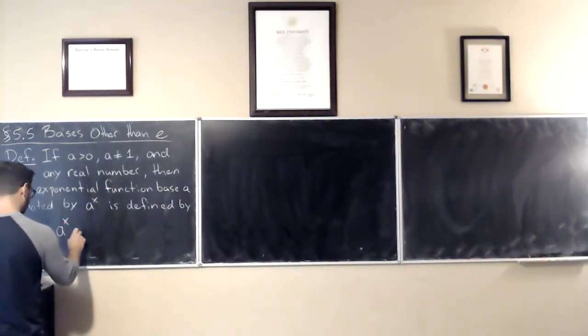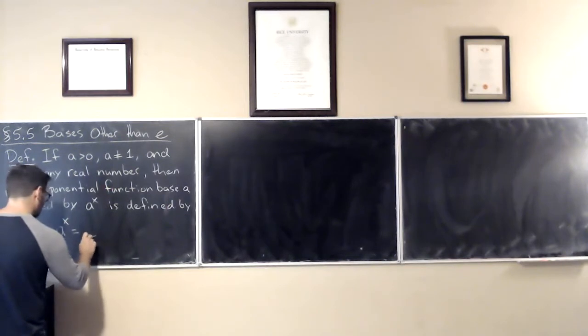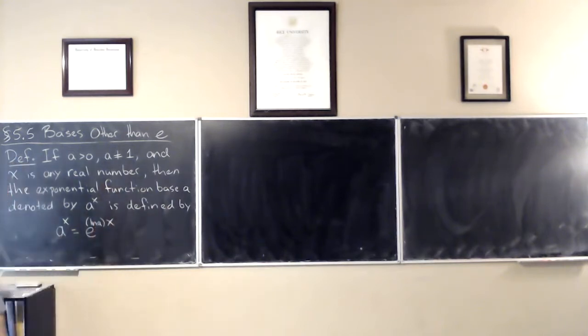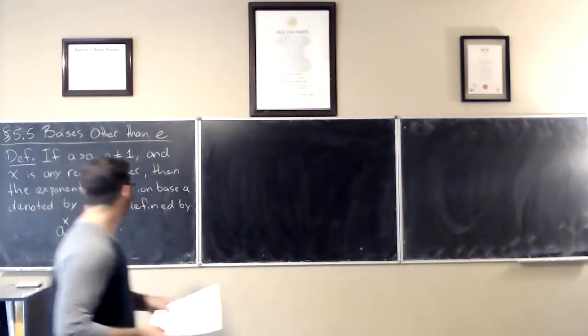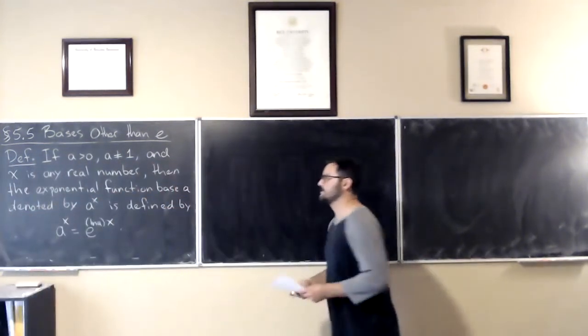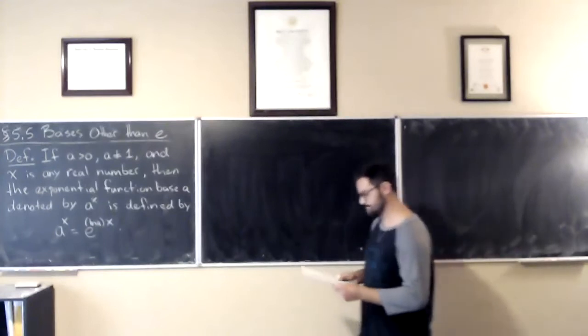a to the power of x is equal to e to the power of natural log of a times x. So this is the exponential function base a.